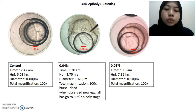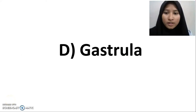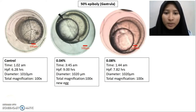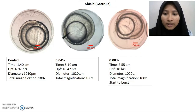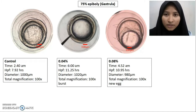At 30% epiboly, the eggs in treatment 0.04% burst and died. When we observed for new eggs to capture pictures of this stage, all eggs had progressed to the next stage, which is the 50% epiboly stage. For the gastrula period at 50% epiboly, for concentration 0.04% we replaced with new eggs. At the germring stage, it does not show any changes between the two treatments and control. At the shield stage, eggs in treatment 0.08% started to burst and were replaced with new eggs at 75% epiboly.